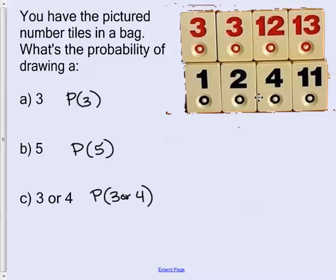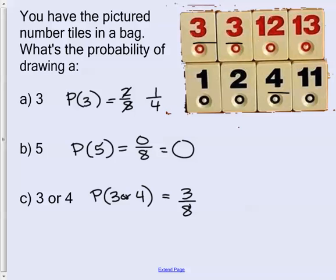If we look here, there's 8 total tiles. So the probability of getting a 3 is 2 eighths or 1 fourth. The probability of getting 5, there isn't any, so 0 over 8. If you put that in your calculator, remember that's okay to have 0 divided by some number because that just equals 0. It's not okay to have the opposite. You can't divide by 0. And 3 or 4, well, we have 1, 2, 3 options then out of 8, and that can't be simplified.